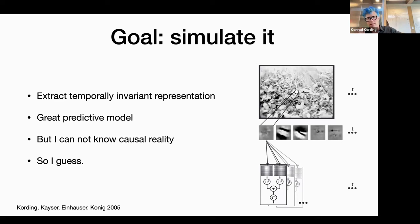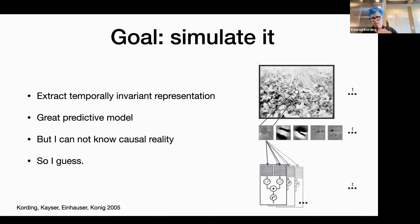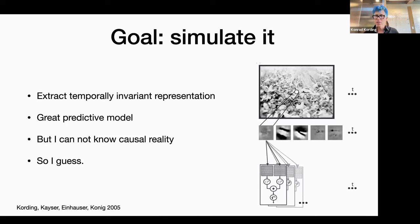I came up with the idea that we should extract the things that don't change over time — it turns out that's basically the same criterion used to train transformers today. I got great predictive models and was able to predict a lot of neural properties. But I didn't know the causal reality. What I did was model a function from what I show on screen to what happens in the neuron. How does the brain actually do it? I have no idea. It could be feedforward via the lateral geniculate nucleus, or it could involve the whole front of the brain percolating back.